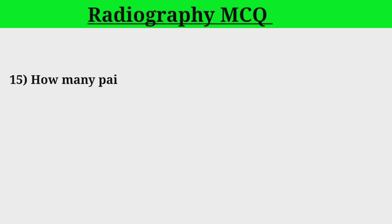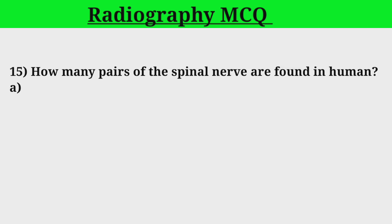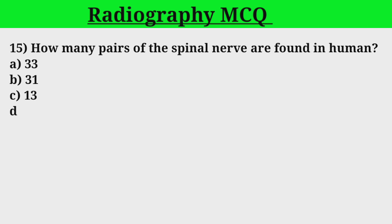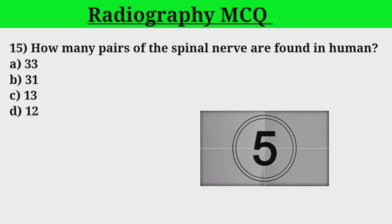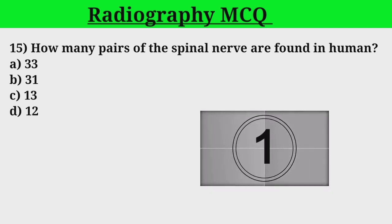Question 15. How many pairs of spinal nerves are found in humans? A. 33. B. 31. C. 13. D. 12. Correct answer: B (31 pairs).